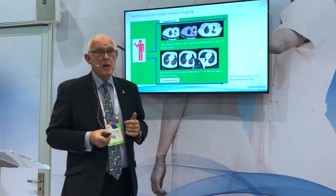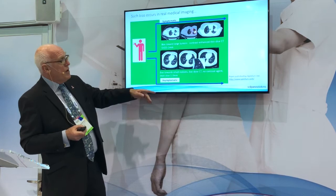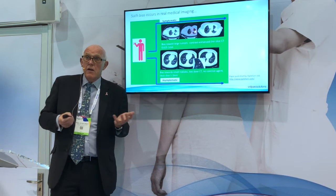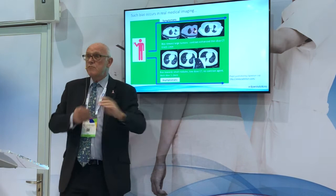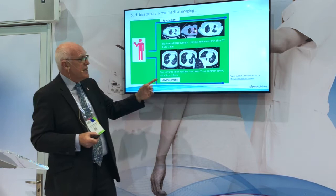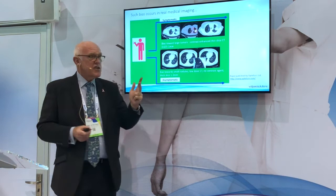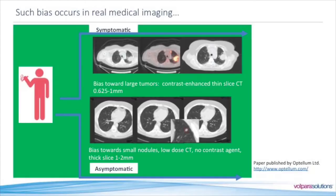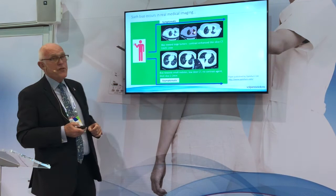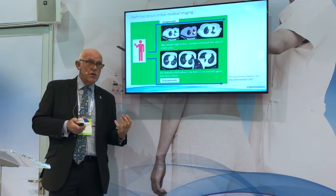Another cautionary example, published recently by Octalom: looking at asymptomatic patients to find incidental lung nodules that may be malignant or benign, and trying to generalize to symptomatic patients gave very poor results. Drilling down, asymptomatics show a bias toward small nodules, low-dose CT, no contrast agent, and thick slice. Symptomatic patients tend to be contrast-enhanced, thin-slice CT with about three times as much data — very different. This is a cautionary word about applying an incredibly powerful tool and misapplying it in practice, which is very easily done.